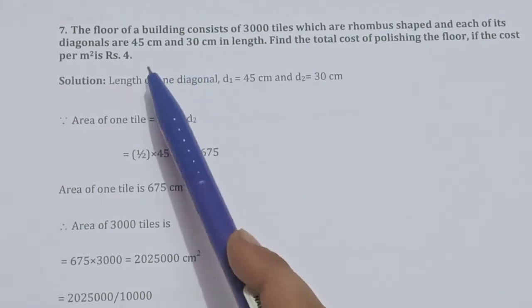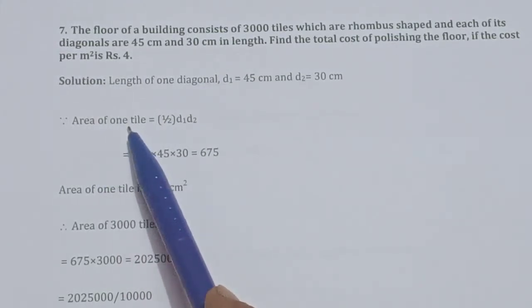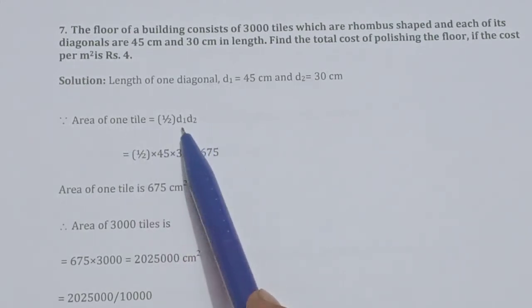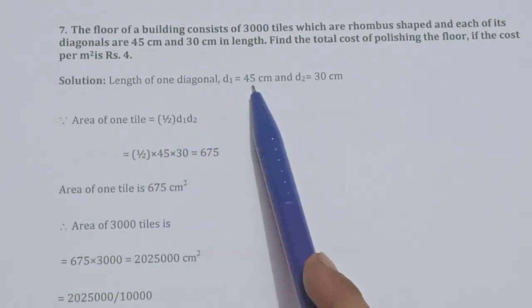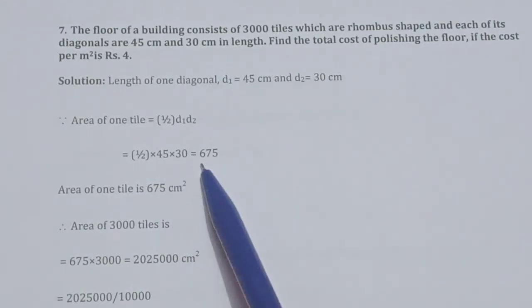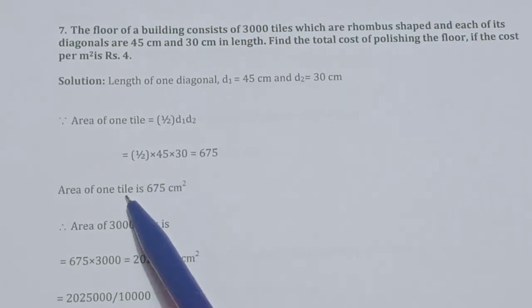We can find the area of one tile, which is rhombus shaped. The area of a rhombus is half into D1 into D2, where D1 and D2 are the diagonals. So area = ½ × 45 × 30 = 675 cm².